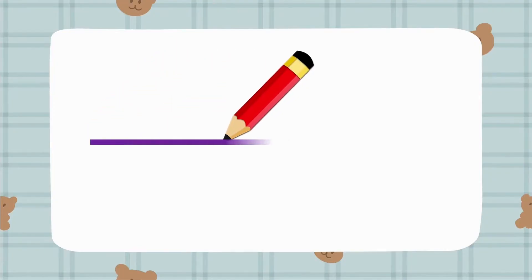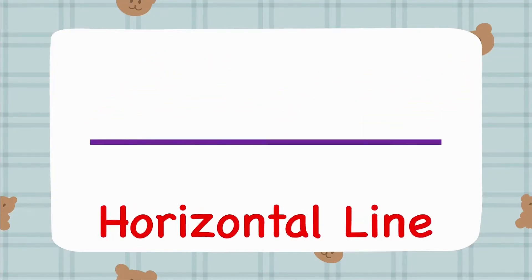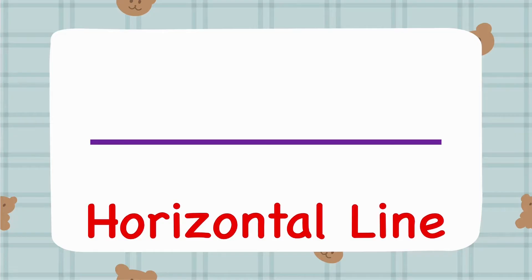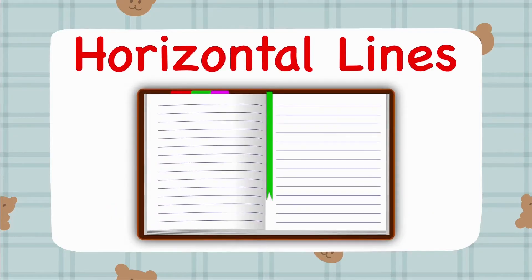Look at this line. This is a horizontal line. For example, this diary has horizontal lines in it.